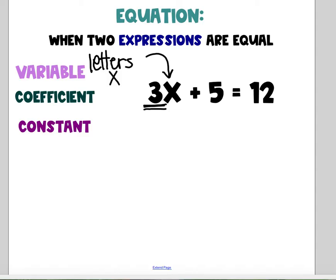It could be positive, it could be negative, coefficients can be a fraction, coefficients can be a decimal. Coefficient works with the variable. And then the constants are the numbers that stand alone. So in this case I have a positive 5 and a 12. Those are the constants.